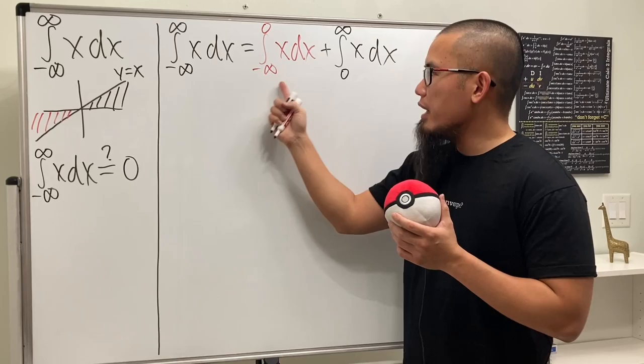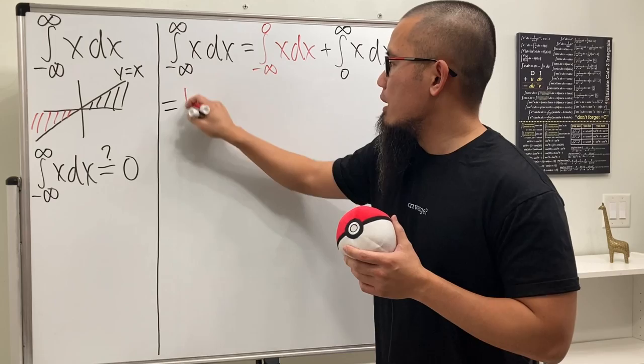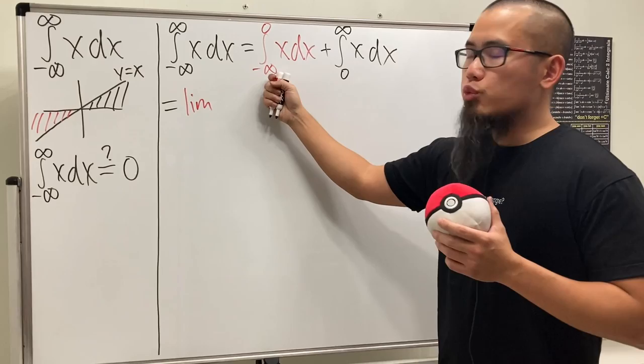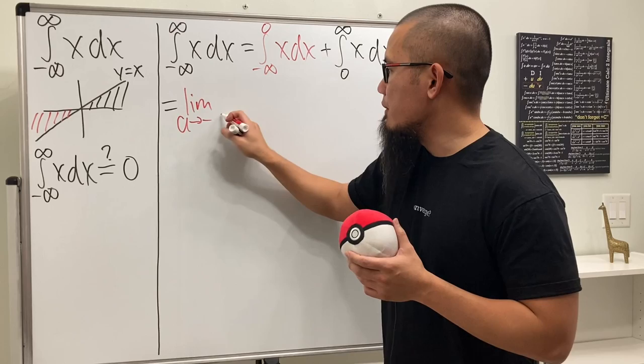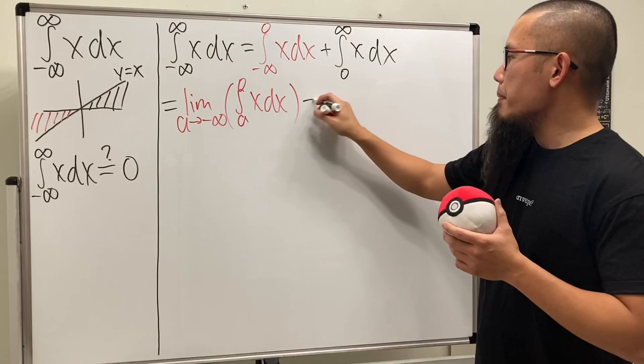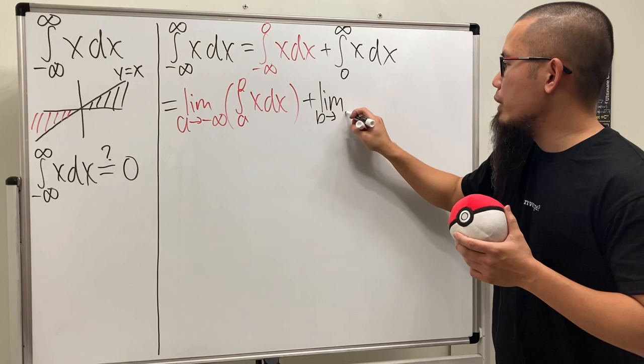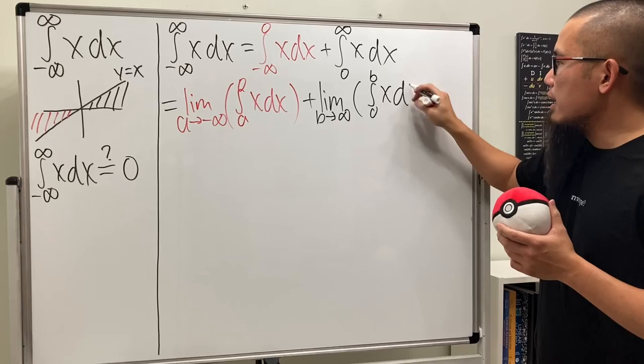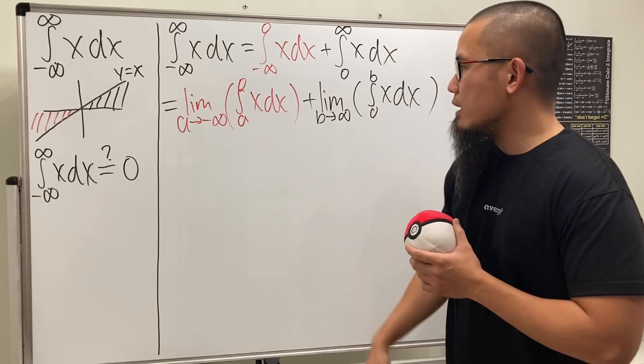To make sense of the negative infinity, we use a limit. We write the limit as a goes to negative infinity of the integral from a to zero of x dx. For the second one, we do the limit as b goes to infinity of the integral from zero to b of x dx.